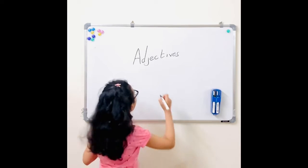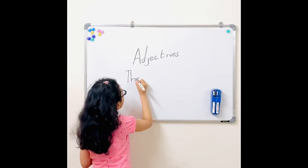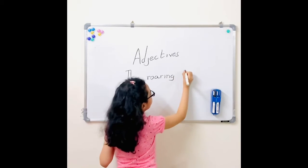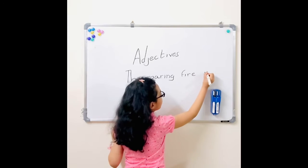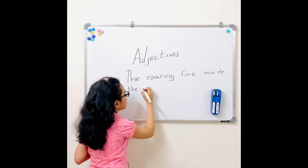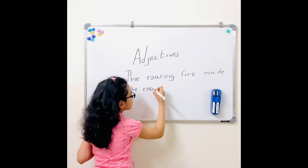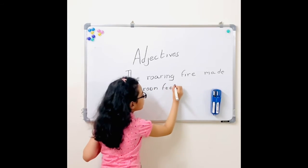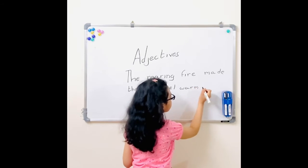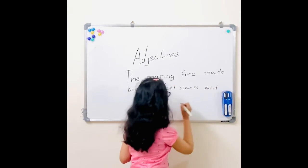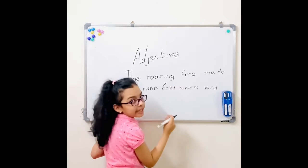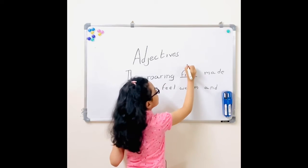Here's an example. The roaring fire made the room feel warm and cozy. So in the first line, the noun here is fire. So I'll write that above.